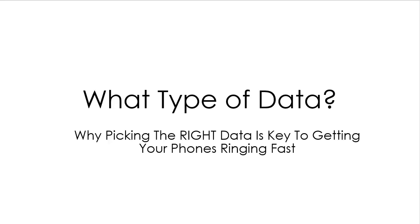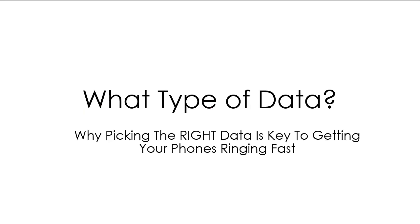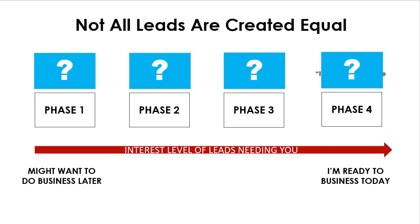What type of data should you first buy? Picking the right data is key to getting your phones ringing fast and getting ROI. Not all leads are created equal. I created a chart showing the line of interest level of leads needing you, and I'm a firm believer there are four phases. On the left is 'might want to do business later' — a longer follow-up — and on the right is 'I'm ready to do business today.' Let's talk about these four phases, then tie them to what type of data you should get.